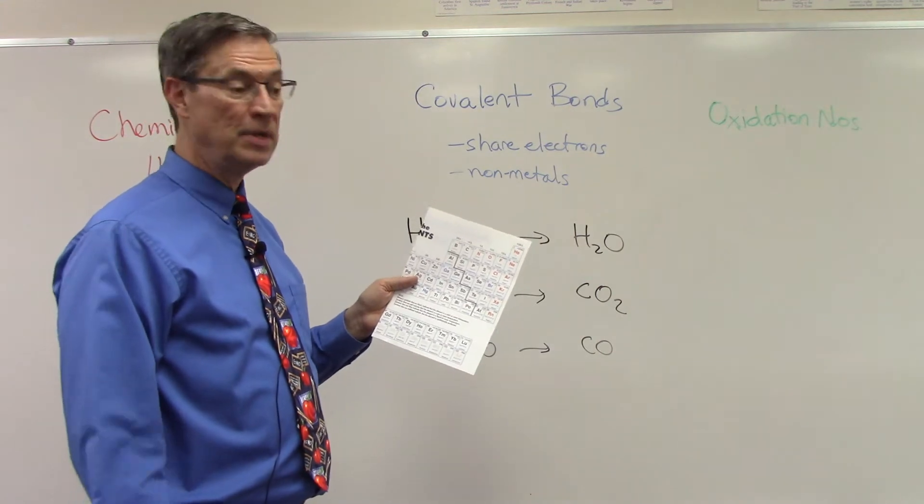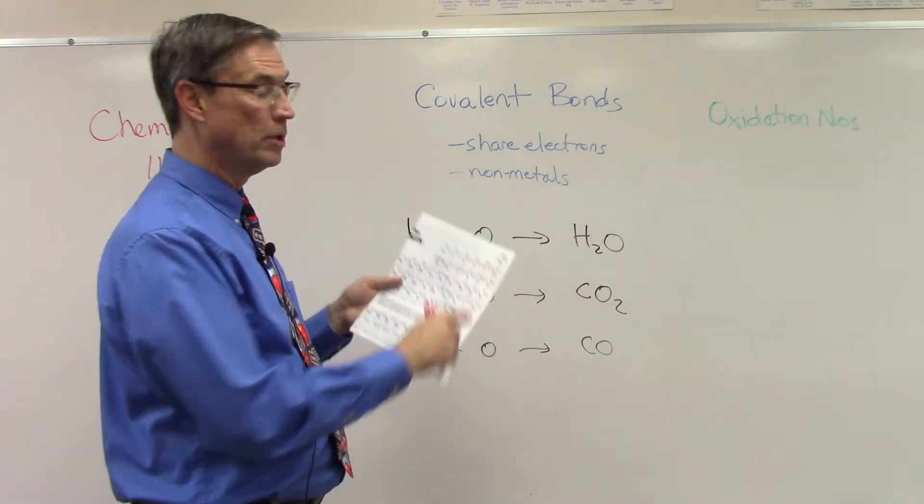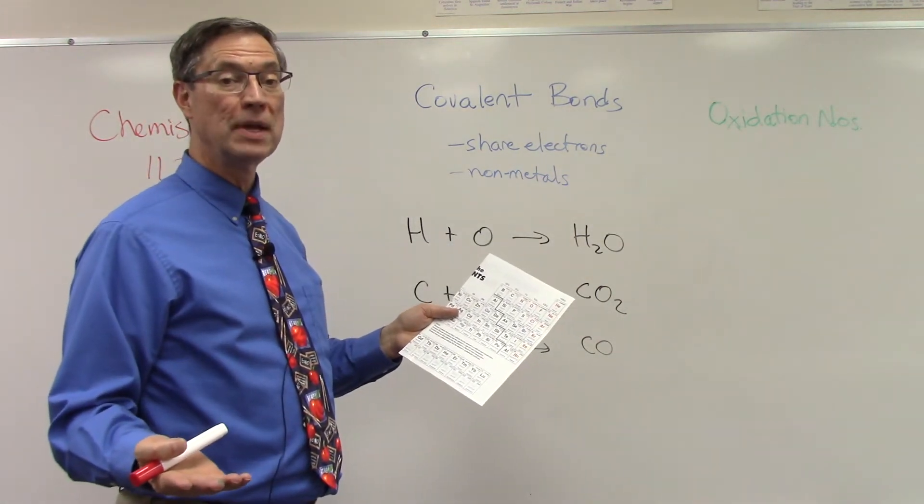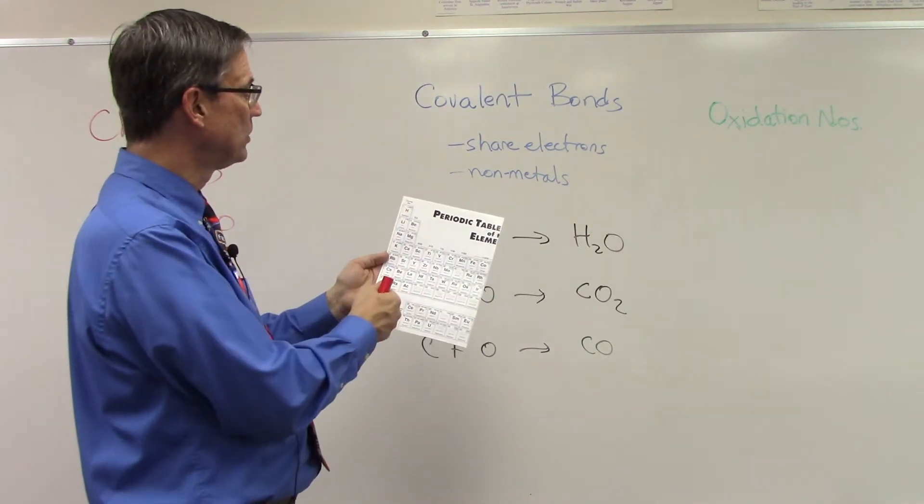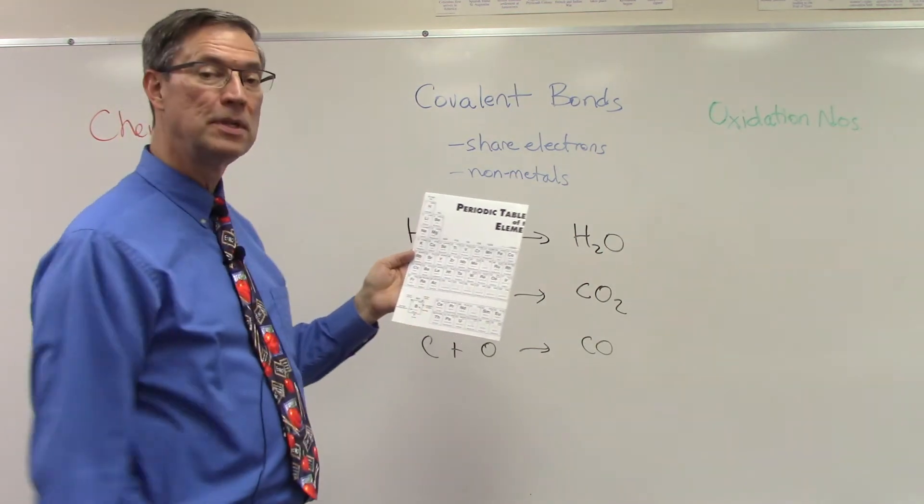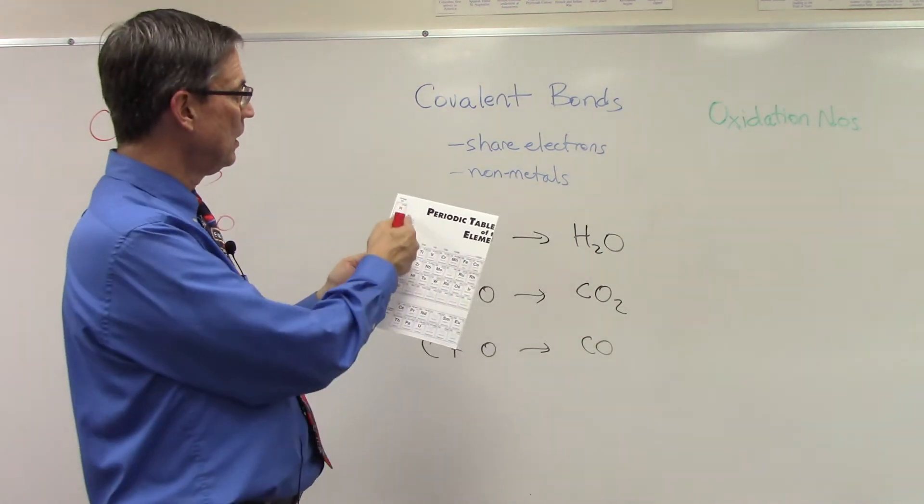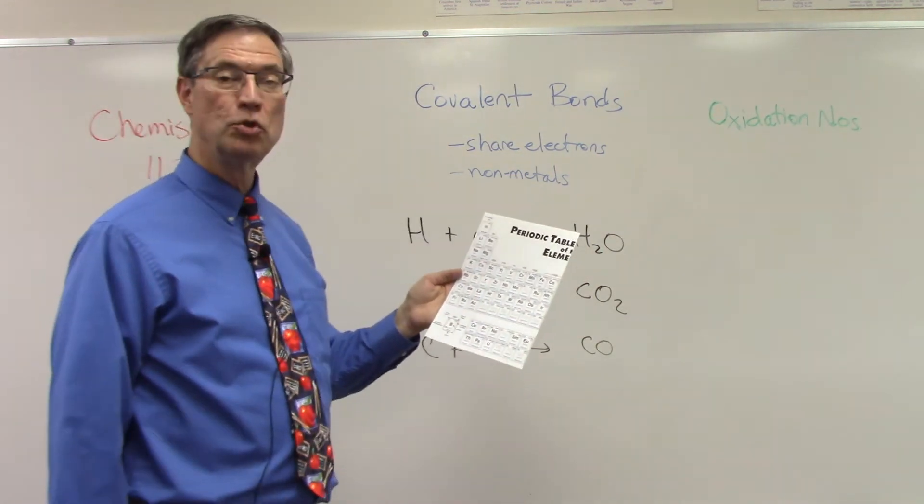And so for some elements, there's only one number, like oxygen. Only one number, negative two. Always, always, always negative two. All of the alkali metals here are all positive ones.